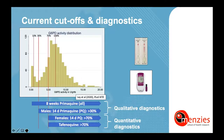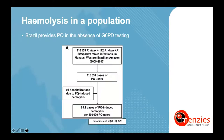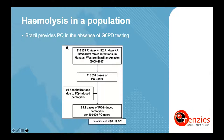Identifying patients above and below 30% G6PD activity requires a qualitative diagnostic, while identifying patients at the 70% threshold requires a quantitative diagnostic such as a biosensor or spectrophotometry. Brazil, categorized as a level 3 country for hemolytic risk, provides radical cure without routine testing. G6PD deficiency prevalence within the Amazon is approximately 5%. A study by Brito Sousa et al. assessed over 110,000 vivax cases treated with primaquine in Manaus from 2009 to 2017, finding 85.2 cases of primaquine-induced hemolysis requiring hospitalization per 100,000 users, with one death.